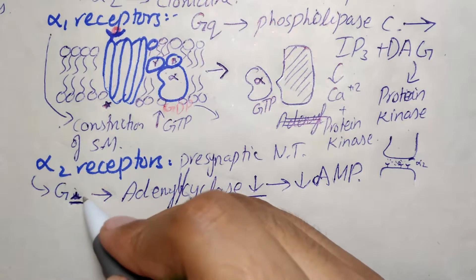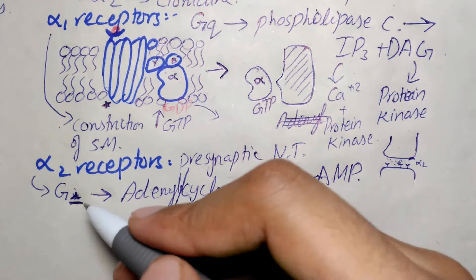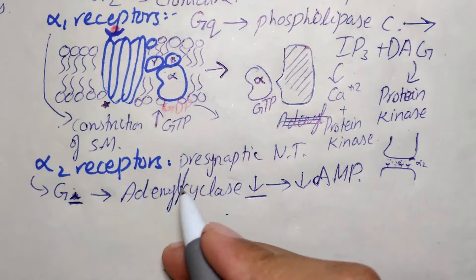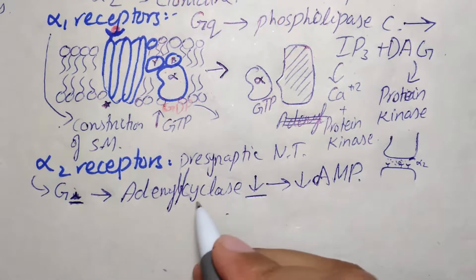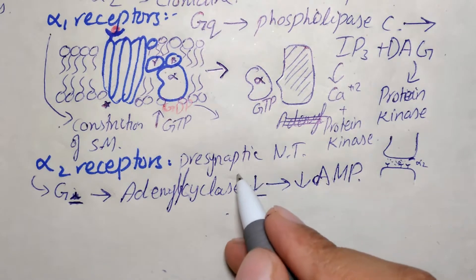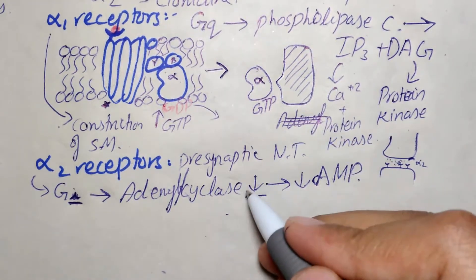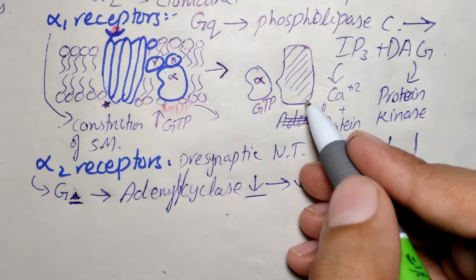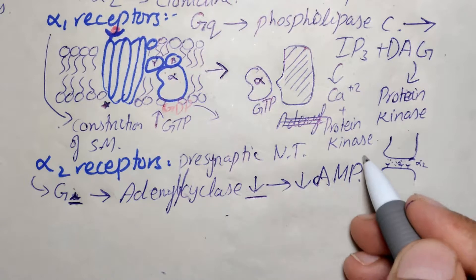When a receptor having GI is activated, it means there is inhibition occurring in the cell having this kind of receptor. There will be a decrease in the activity of adenylyl cyclase, and consequently a decrease in the concentration of cyclic AMP.